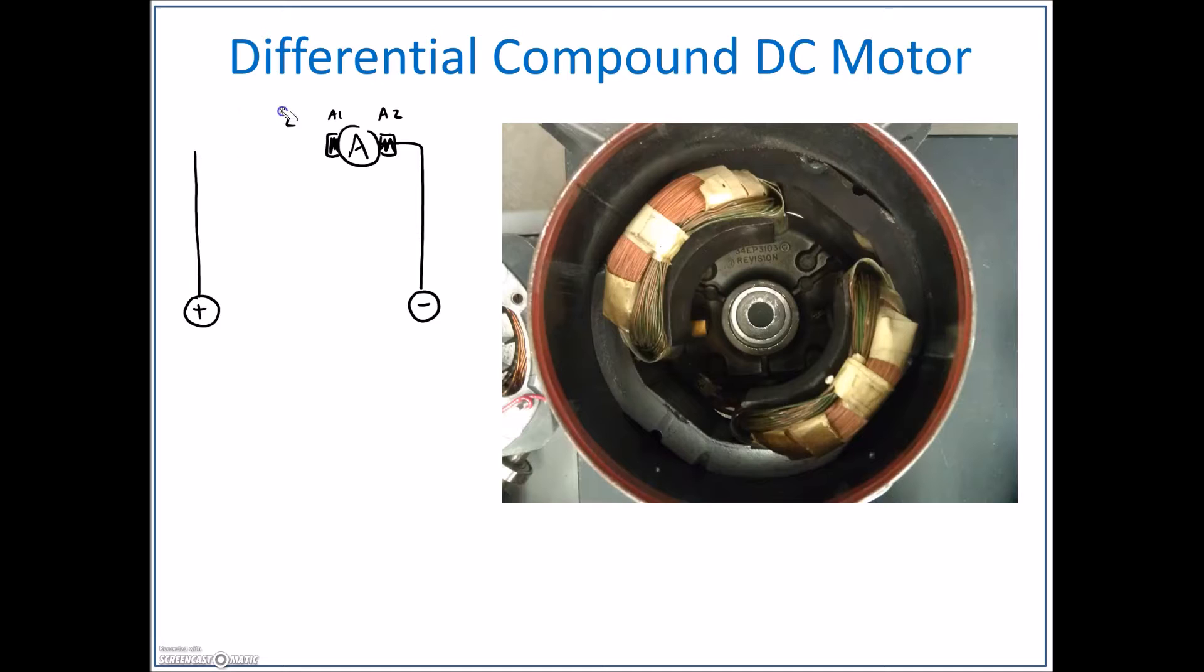Then we hooked it up as a shunt motor and saw which way it spun. If they were both spinning in the same direction, we knew that our magnetic polarity of both the series and the shunt were set up in the same direction. That was crucial because if we screw up the connections on the compound motor, some funky things happen.